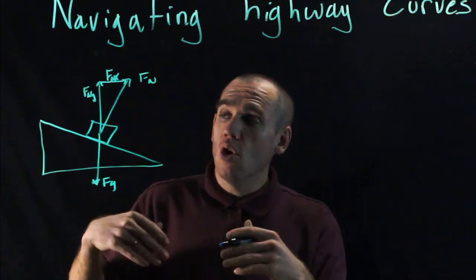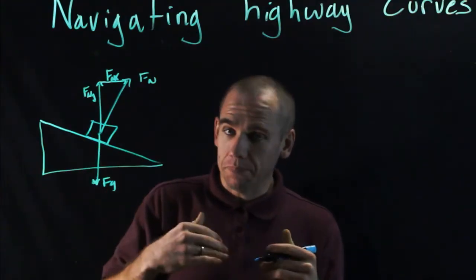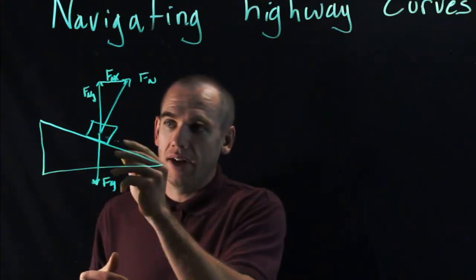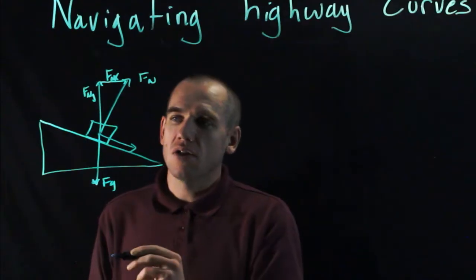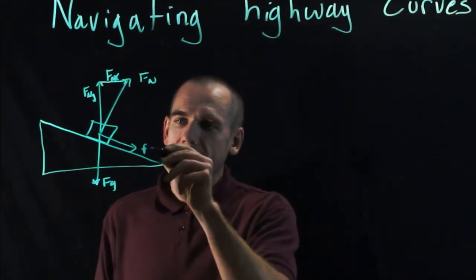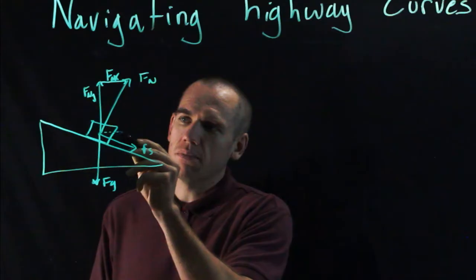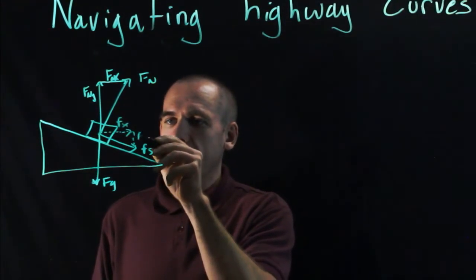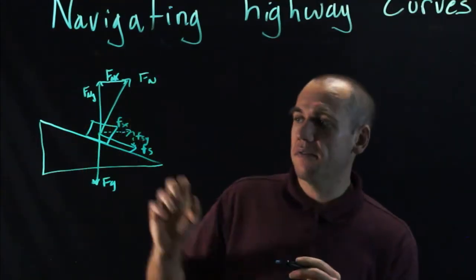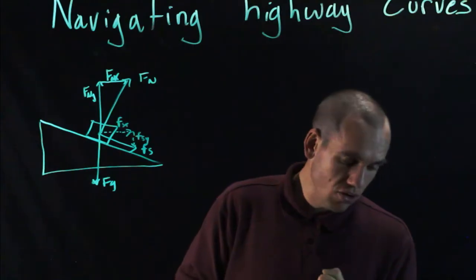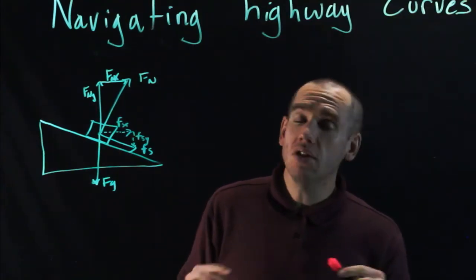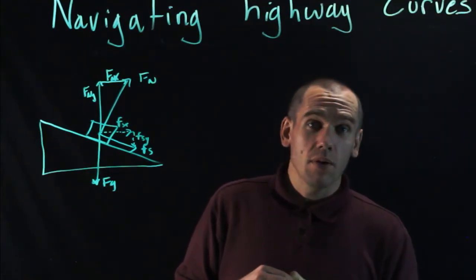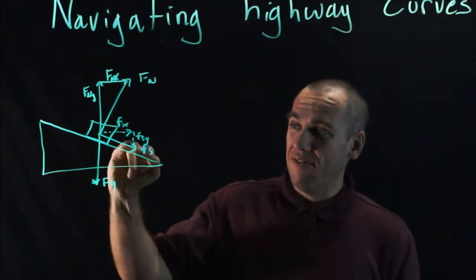And so that means friction is going to have to act down the incline. It can only act parallel to the surface. So there's the frictional force F_s. And that frictional force is going to have components F_sX and F_sY. So now I've got a whole mess of forces going on in here that are causing my centripetal acceleration. It's not going to work out quite as simple as it did before because I have this extra set of forces.